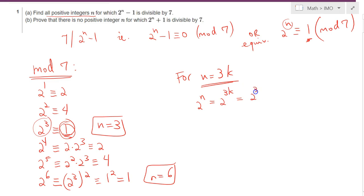But 2 cubed is congruent to 1, we established it, and 1 to the power k is just congruent to 1 in mod 7. So therefore the answer would be n equals 3k would satisfy this condition and no other solution will satisfy it.